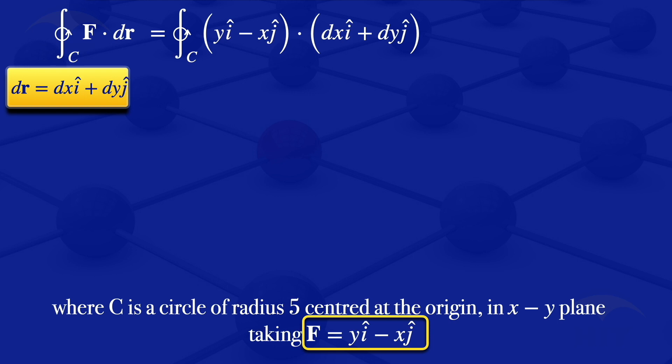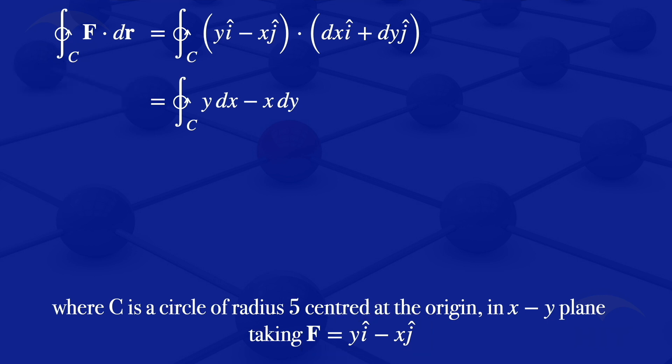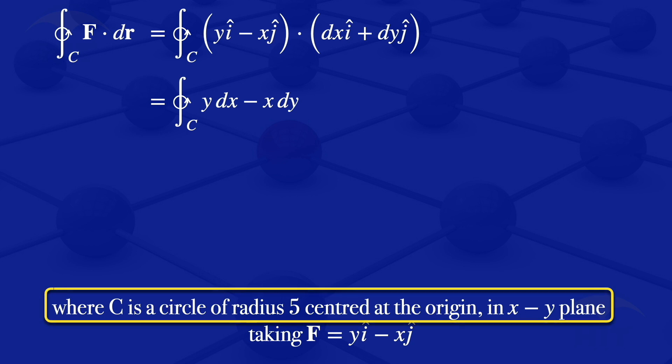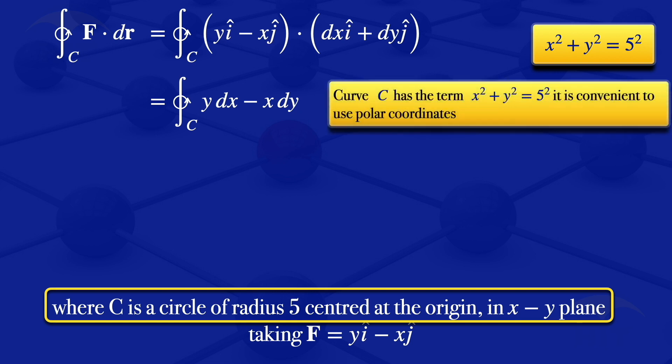Our integral becomes the integral along the closed curve C in the positive direction of y dx minus x dy. We are given that C is a circle of radius 5 centered at the origin. The equation is x² + y² = 5², and when we have a term of the form x² + y² = 5², it is convenient to use polar coordinates to evaluate the integral.